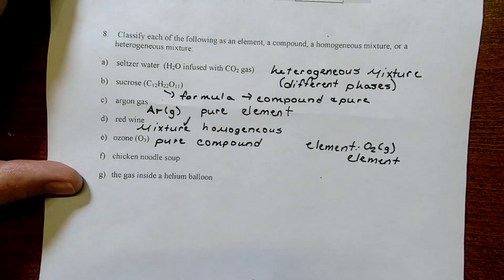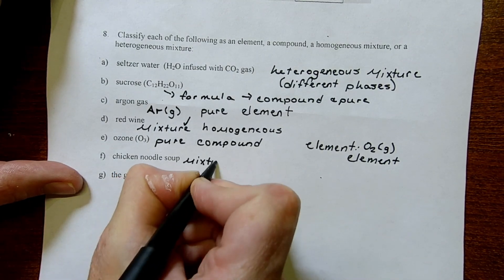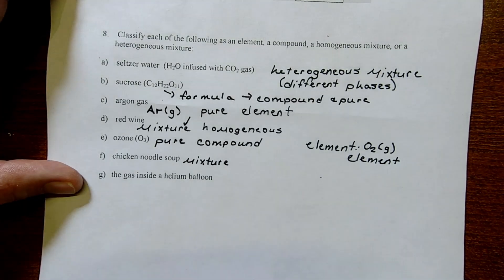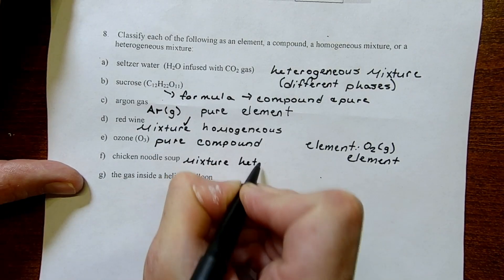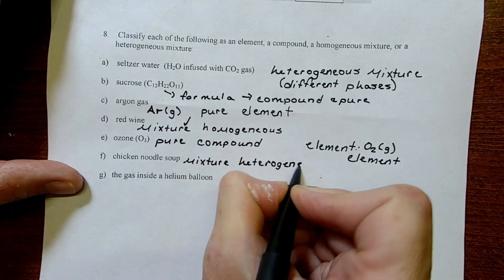Chicken noodle soup. Definitely a mixture, right? If you think about all the different things that are in some soup. And it doesn't have uniform composition. If you get one ladleful, it might have a lot of meat in it. And then, the next ladleful might have just a bunch of broth. It's heterogeneous, because every serving has a different composition.